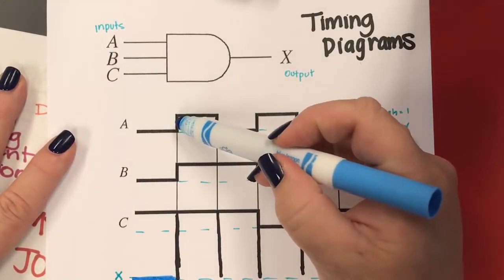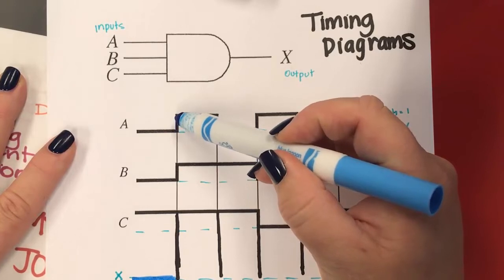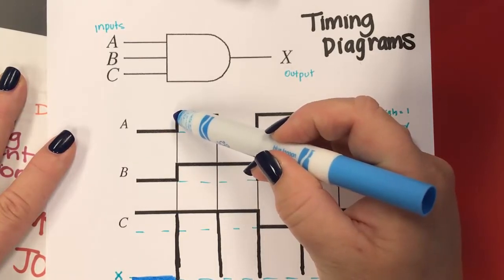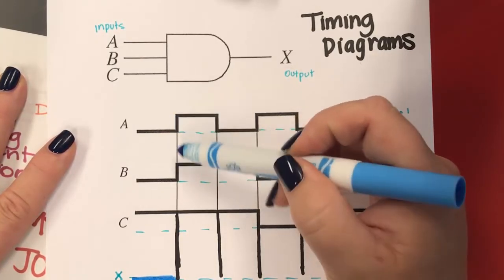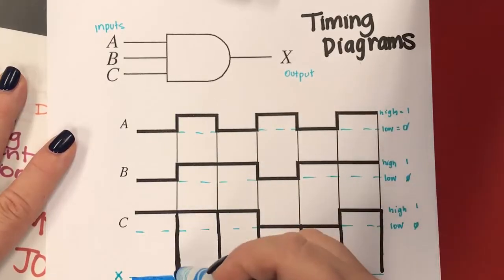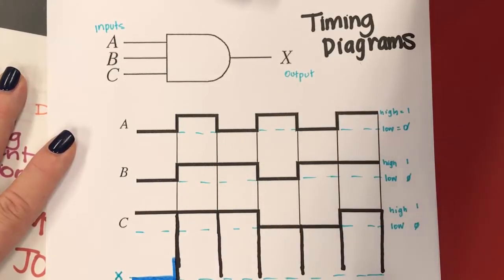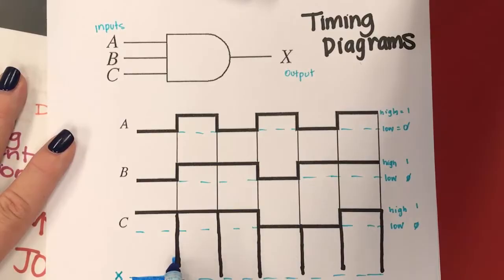And then we get to the line, so we need to check again. So now it's one for A, it's one for B, and one for C, so we need to go up to the high value. And it's going to stay high across there.